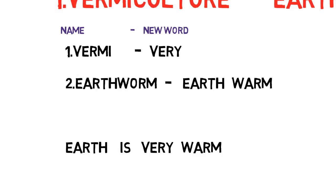Next, try to remember 'earthworm' — warm means hot, so earthworm sounds warm. Now I am going to use these two new words to make a meaningful sentence: 'Earth is very warm.' Here 'very' means vermiculture. So vermiculture is related to earthworm. Try to repeat this sentence three or four times so that you can never forget it throughout your life.